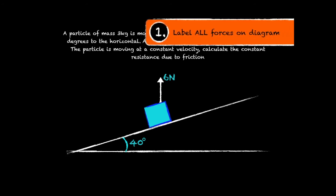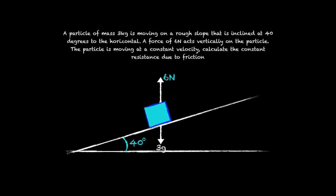Step one, label all the forces on the diagram. So we have a weight of 3g in this example. We also have a normal reaction force acting perpendicularly to the slope.